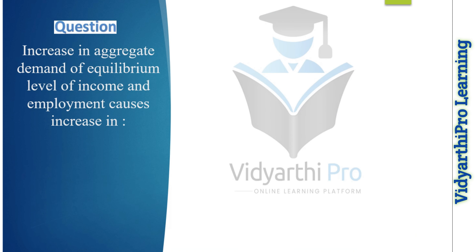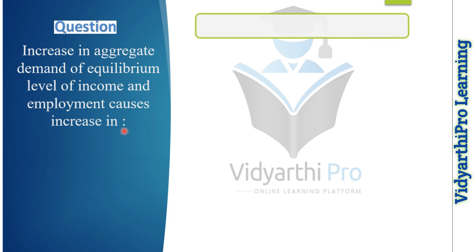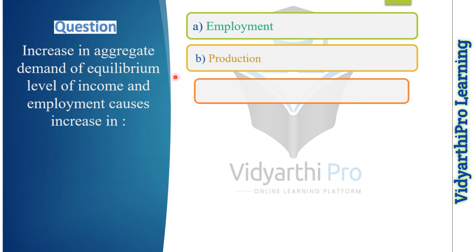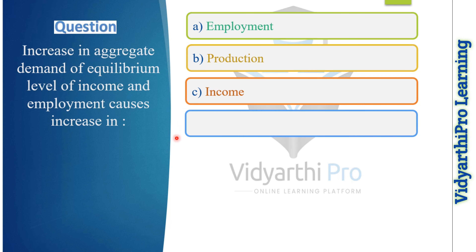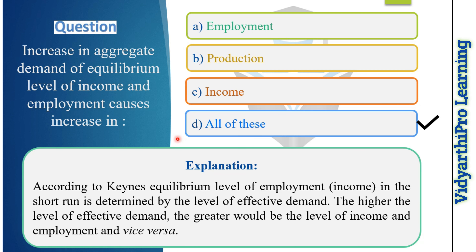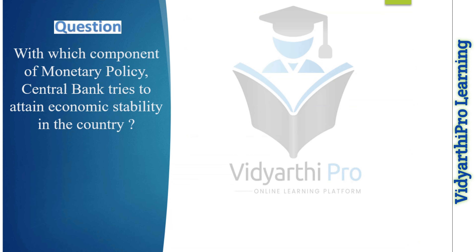Our next question: an increase in aggregate demand at the equilibrium level of income and employment causes an increase in what? Option one: employment. Option two: production. Option three: income. Option four: all of these. The correct answer is option four, all of these, because according to Keynes, the equilibrium level of employment and income in the short run is determined by the level of effective demand — the higher the effective demand, the greater the level of income and employment.